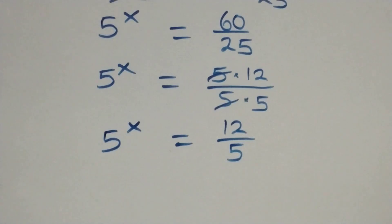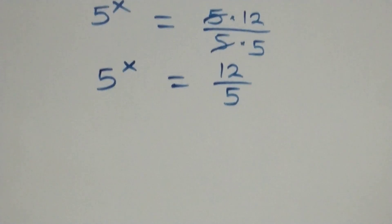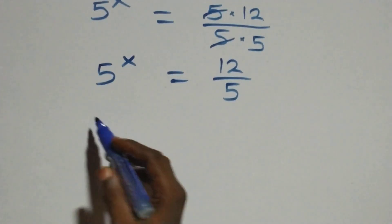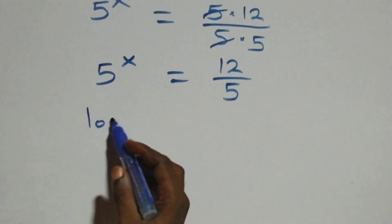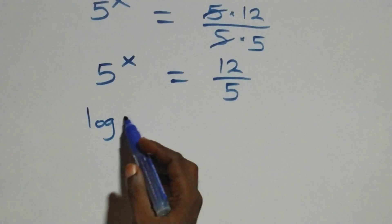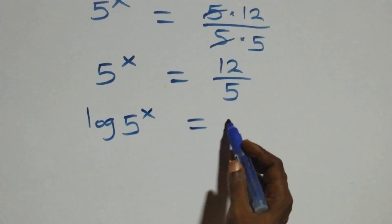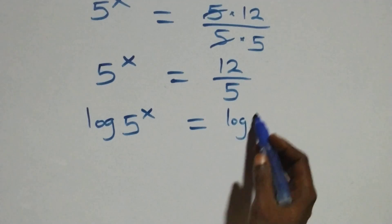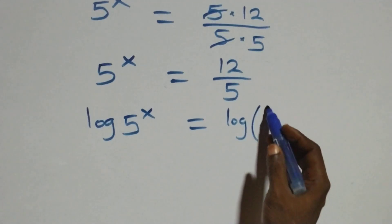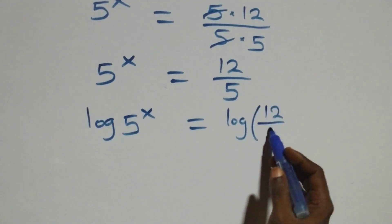The next step: we take the log on both sides. We have log of 5 raised to power x equals to log of 12 over 5.